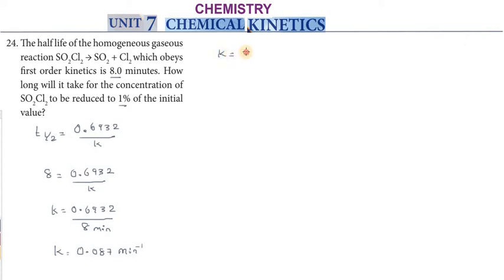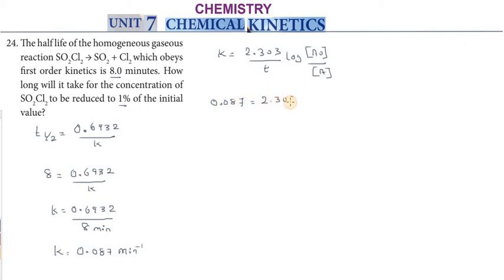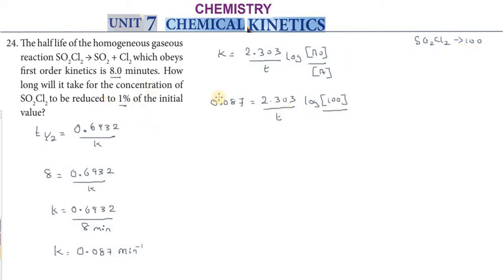The integrated rate law for a first-order reaction is: k equals 2.303 divided by t, multiplied by log of a0 by a. Here, 0.087 equals 2.303 divided by t, multiplied by log of a0 by a. The initial concentration a0 is 100% and the final concentration a is 1%.